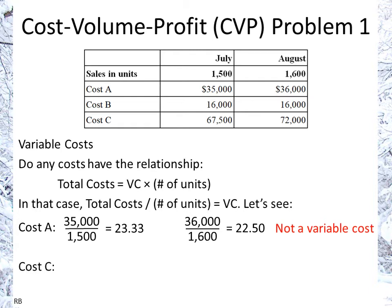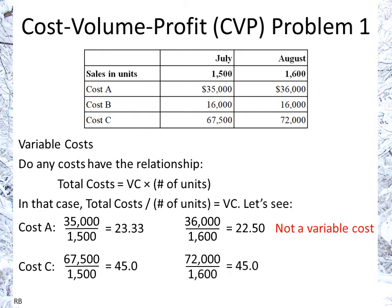Now let's look at C. We have 67,500 for July and 72,000 for August. If we take July: 67,500 over 1,500, that gives us $45 per unit on average. And if you look at August, we will also get $45 per unit on average. So that means C is a variable cost.